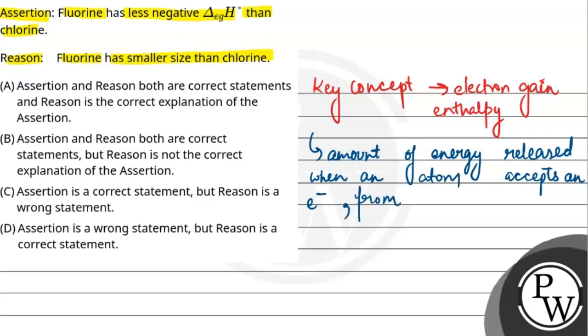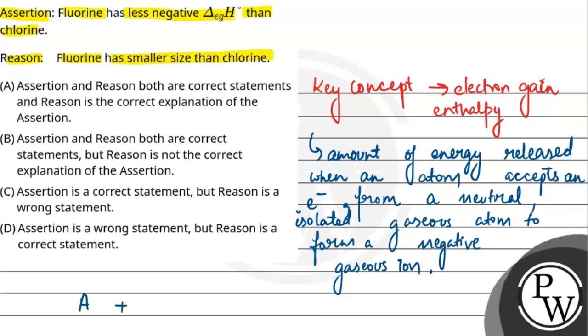From a neutral isolated gaseous atom to form a negative gaseous ion. When an atom accepts an electron to form a negative gaseous ion, the energy releases—that is known as electron gain enthalpy. So we have to know that fluorine has less negative electron gain enthalpy than chlorine.